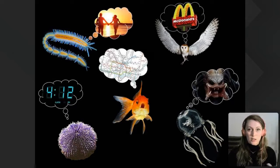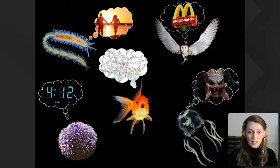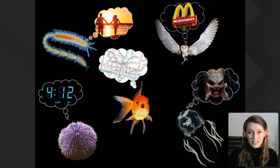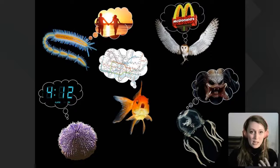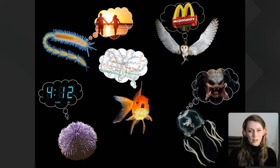Light can provide information regarding all sorts of different aspects of their lives: keeping their daily rhythms in check, navigating, finding a mate, or finding a tasty snack. All of these things are really important to their ecology, their behaviour, and ultimately their evolution. By understanding how they experience their world, we can learn a lot more about all of these different aspects of their biology as well.